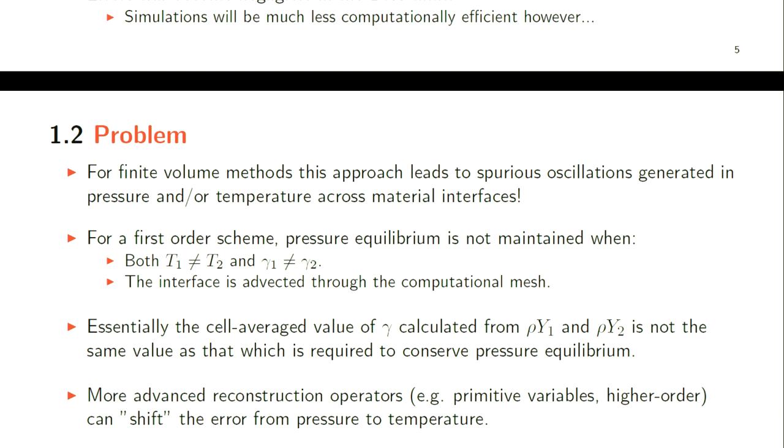For finite volume methods in the reconstruction phase, this approach leads to oscillations in pressure and temperature across material interfaces and contact surfaces in a single fluid. It has been shown that for a first-order scheme, pressure equilibrium isn't maintained when the temperatures on either side of a contact surface aren't equal, and also when the ratio of specific heats aren't equal. This is all further exacerbated when the interface is advected through the computational mesh.